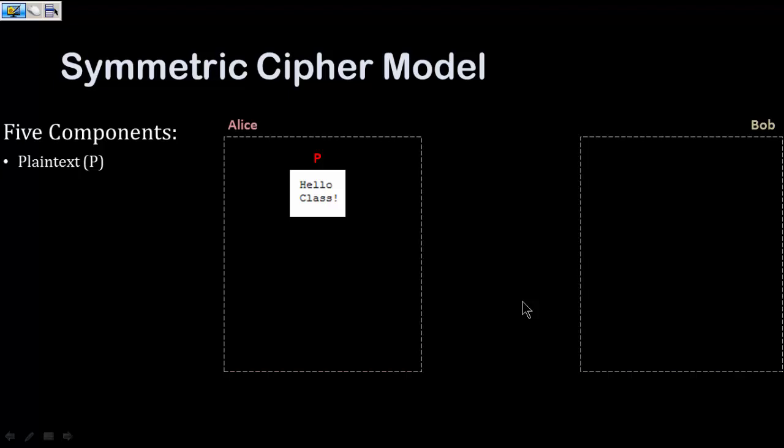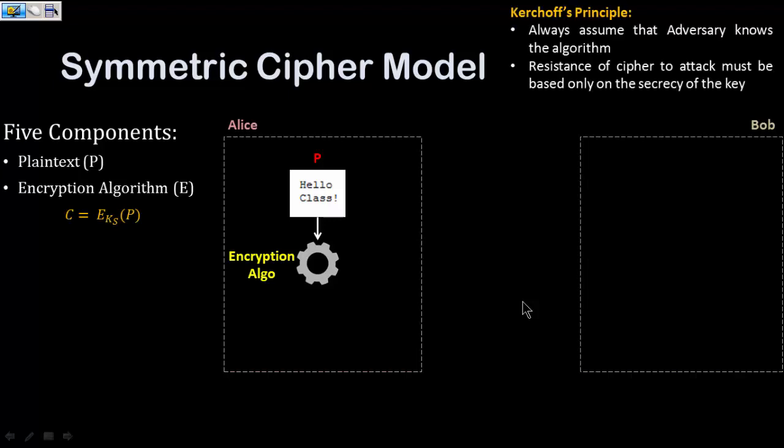Therefore Alice needs to have an encryption algorithm. With respect to encryption algorithms, we already discussed Kirchhoff's principle, which says that you have to assume that every adversary, every hacker or intruder, knows about the algorithms that are existing. Therefore, the secrecy of the message or the ciphertext is all dependent on the secrecy of the keys.